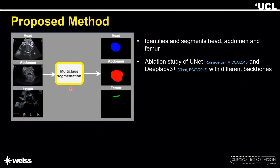This is done by performing multi-class segmentation to identify and segment head, abdomen, and femur anatomies in the three standard ultrasound planes. For this task, we used two state-of-the-art segmentation algorithms, namely U-Net and DeepLab V3+, with different backbones, and performed an ablation study to obtain the best-performing network.